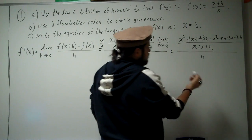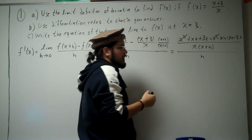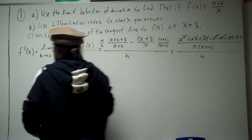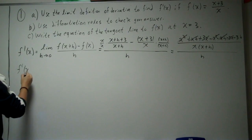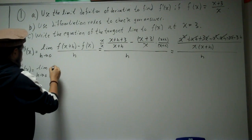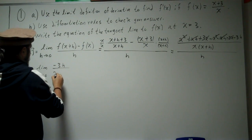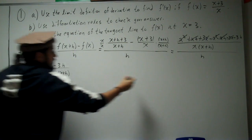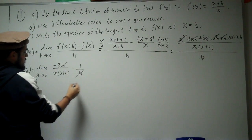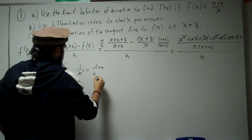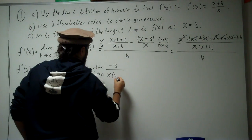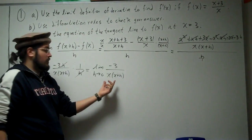After cancellation, the x squared terms, the xh terms, and the 3x terms all cancel. We're left with the limit as h approaches 0 of negative 3h divided by x times x plus h, all divided by h. Multiplying by the reciprocal 1 over h, the h's cancel, leaving the limit as h approaches 0 of negative 3 divided by x times x plus h.